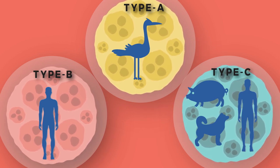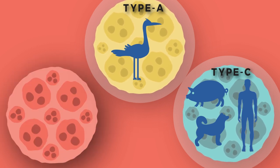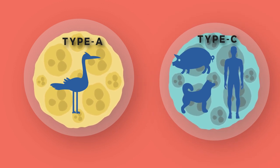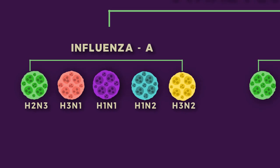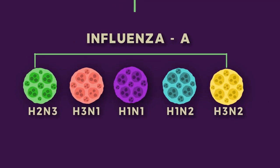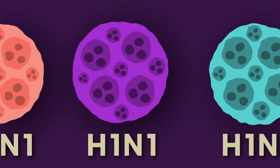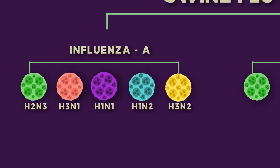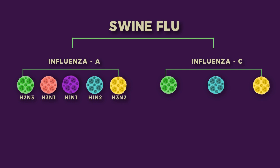When it comes to swine flu, there are a variety of viruses involved. Swine flu as a whole carries influenza A and influenza C viruses. In type A there are subtypes called H1N1, H1N2, H3N1, H3N2, and H2N3. Among these, H1N1 is the one we've all heard of, simply because it is more dangerous and caused many deaths during the 2009 swine flu outbreak.